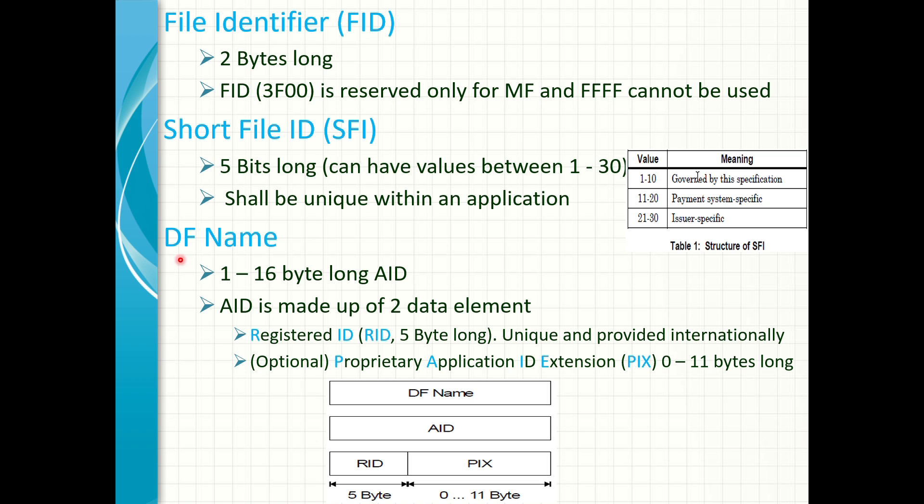The short file ID is used to encode names of elementary files. It is 5 bits long and therefore can only have values between 1 and 30. The elementary file with the ID 0 is always the actual selected elementary file. A short file ID is only used to simply select elementary files. It must not be given to each elementary file.